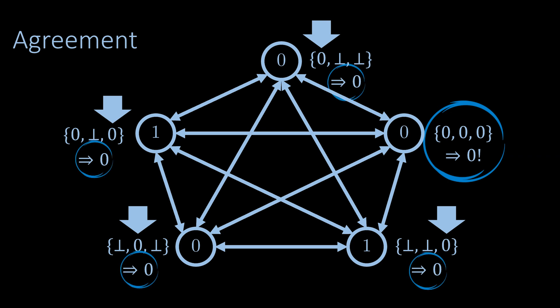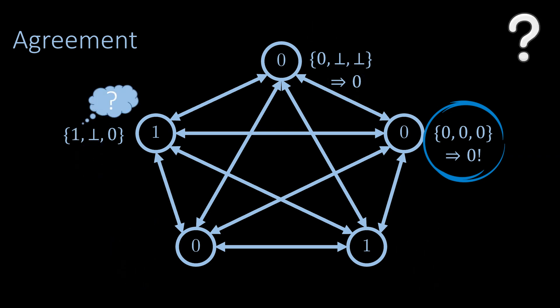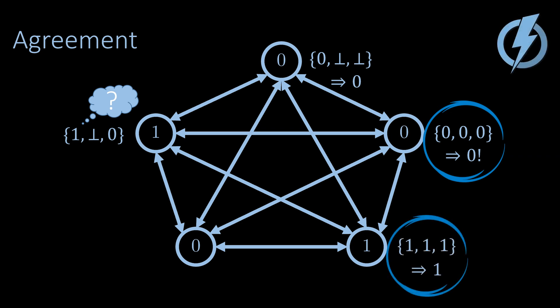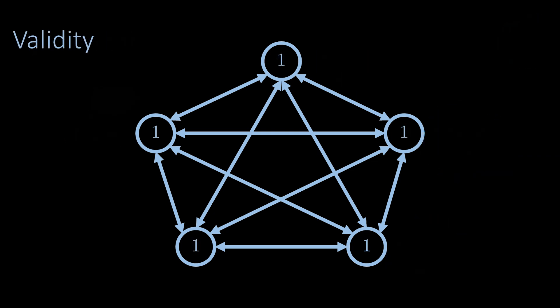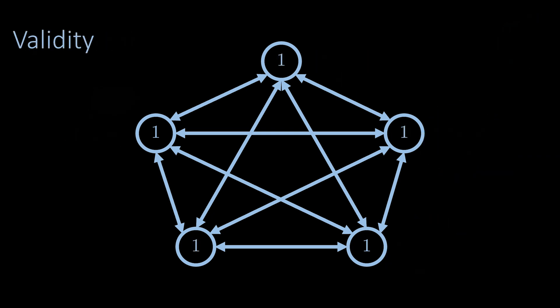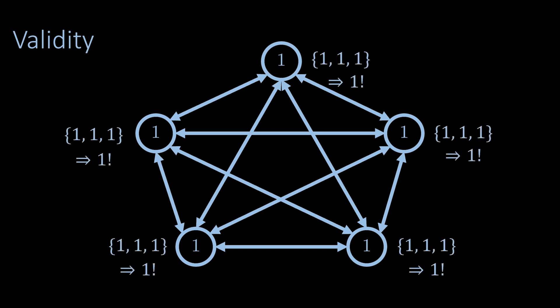But wait — what if some node also received a proposal for the other value? In the example the node in the top left not only received a proposal for zero but also a proposal for one. Fortunately this case is actually not possible. If there is a proposal for zero then at least three nodes must have value zero at the beginning of the round; likewise if there is a proposal for one, at least three nodes must have value one. But there are only five nodes, so it is not possible that there are proposals for both values in the same round. If all nodes start the round with the same value they will decide on that value, so the validity property holds as well.